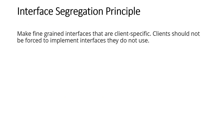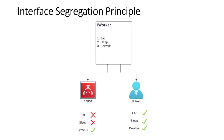The Interface Segregation Principle states: make fine-grained interfaces that are client-specific; clients should not be forced to implement interfaces they do not use. In this example, there is an IWorker interface with three method definitions: eat, sleep, and do work. It is implemented by two worker types: robot and human. The robot does not eat or sleep but does work. The human eats, sleeps, and does work — so it makes sense for human to implement all IWorker methods, but it does not make sense for the robot to implement eat and sleep.